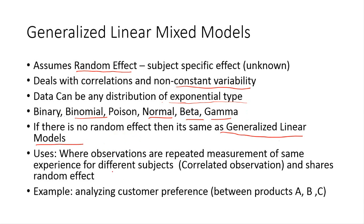So where can we use it? We can use these models where the observations are repeated measurements of the same experiment for different subjects. Since the observations are repeated measurements, there is a high chance that the observations would be correlated. In this case, we can use generalized linear mixed models, as there is some random effect in the data that could be due to subject-specific or totally unknown reasons.